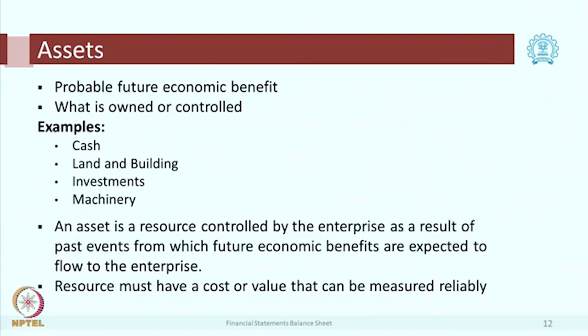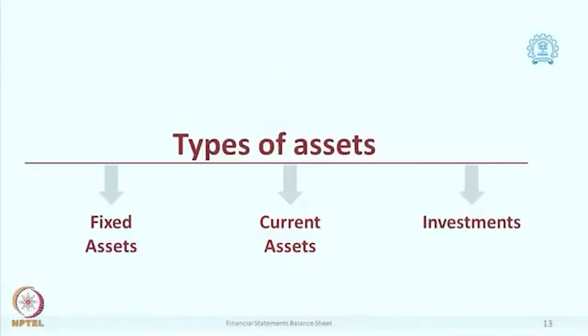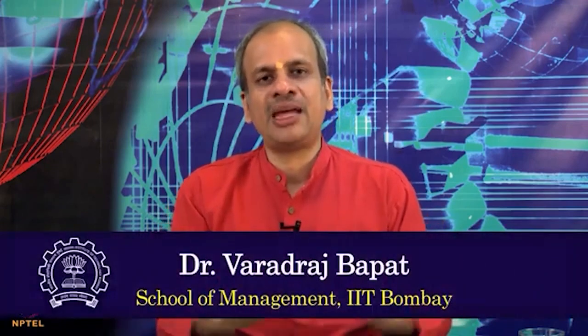The formal definition is: an asset is a resource controlled by the enterprise as a result of some past event, but it must have future value. Additionally, the resource must have a cost or value that can be measured reliably — if we have an asset whose value cannot be reliably estimated, we cannot show it in the balance sheet. The types of assets are fixed assets, current assets, and investments. We will now take up each asset individually and discuss it in detail. Till then, please go to your company's balance sheet and look at what assets they have for real learning. Namaste, dhanyavad.